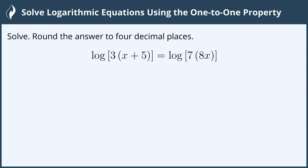Let's review the one-to-one property. The one-to-one property says if I have an m that equals an n, then log base b of m must equal log base b of n, because it holds true if m equals n.